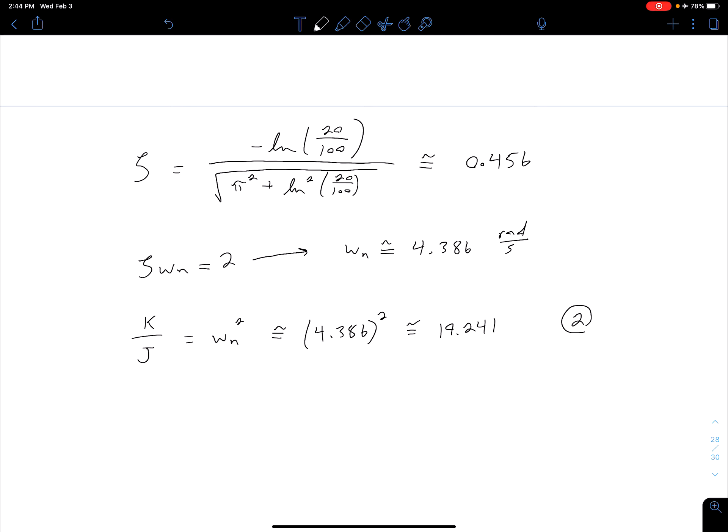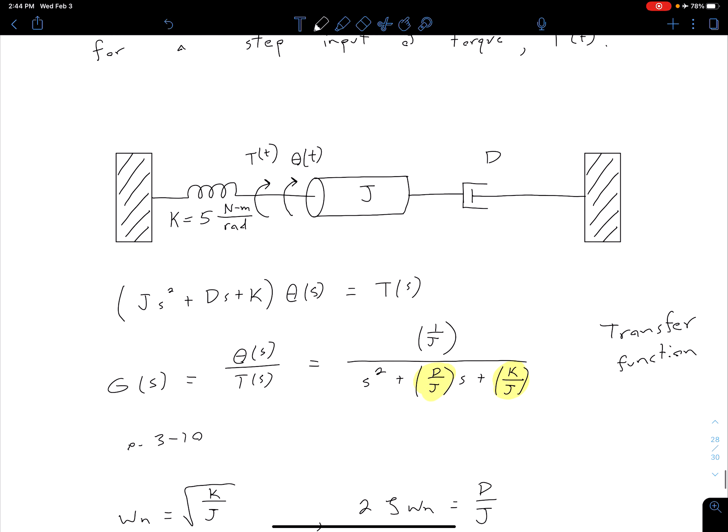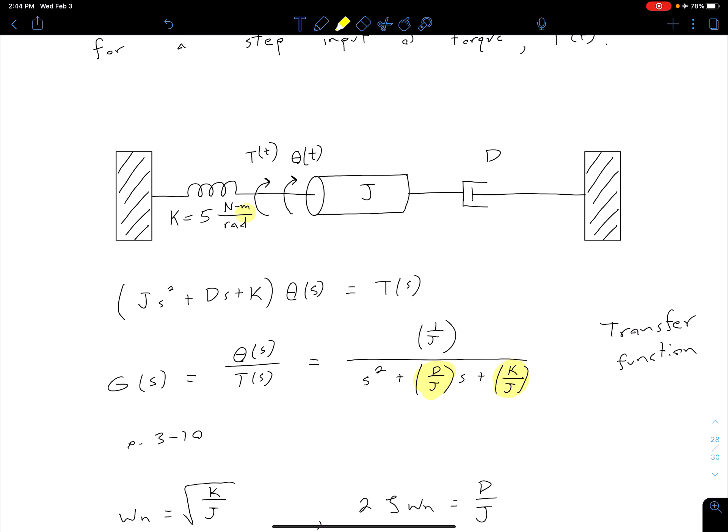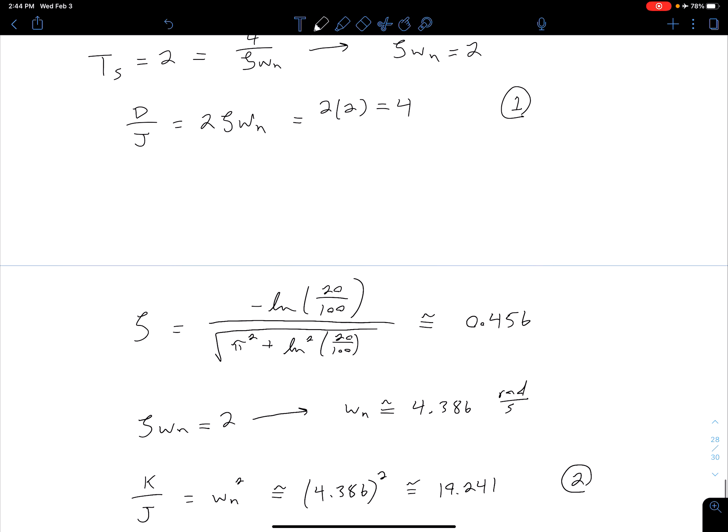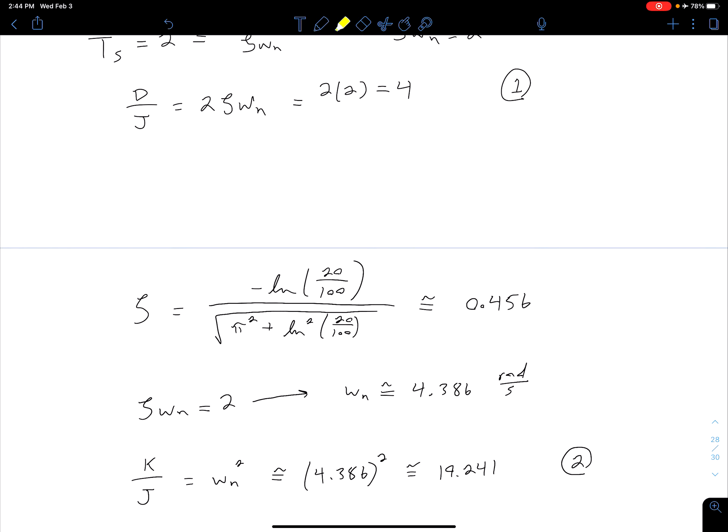Now we go back to what we were given in the problem and we see as we stated earlier we're given information about our spring. So we know that K is equal to 5. Looking at our two equations 1 and 2 we see that we don't know D, we don't know J, but we do know K. So what we're going to do now is kind of work in reverse. From equation 2 we can find our J value and then once we know J we can come back up to equation 1 and find our D value.